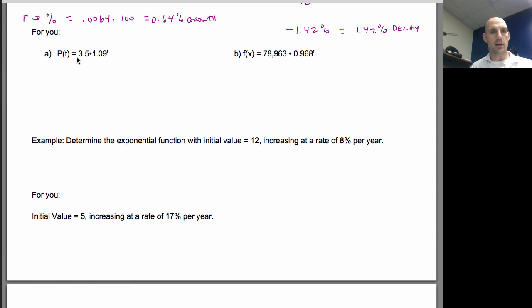All right, we're back. So like we did up above, this was P sub 0. And so this is my 1 plus R. And so if I do 1.09 minus 1, that would give me 0.09, which would mean 9%. And because it's positive, that's growth.